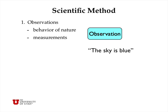The scientific method consists of three parts, and the first one is observations. Scientists make careful observations about nature and make observations in the course of doing experiments to test ideas about nature. A simple observation would be: the sky is blue.